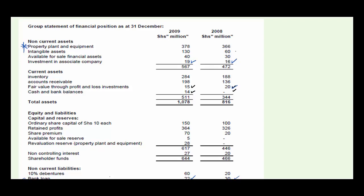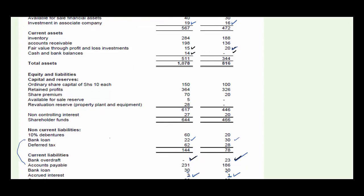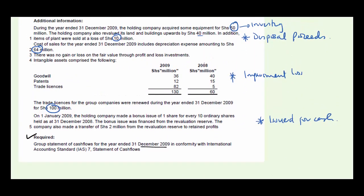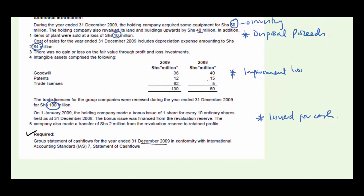Under intangible assets, the balance was 60 and became 130. Looking at the note in detail, we can confirm the 60 and 130 figures. The question is: what is the impairment of these intangible assets, considering we have already factored in the renewal at 100 million? We set up working four: impairment loss on intangible assets.